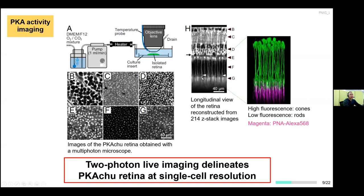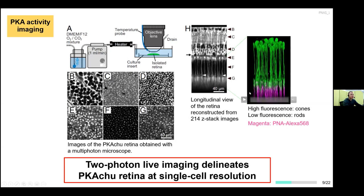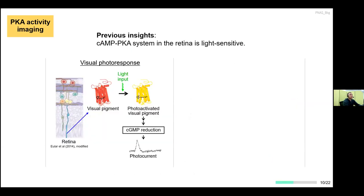One interesting finding was that in the reconstructed longitudinal view of the retina, some group of cells in the bottom half have higher fluorescent intensities than others. From the position of the nuclei, it seems to be cones. This was confirmed by PNA-Alexa staining — PNA is a lectin that binds specifically to the extracellular matrix of cones — and staining showed 100% match. Together, I established the two-photon live imaging method to analyze PKA activity at single-cell resolution, including the rod-cone difference. I will use this feature in later analysis.